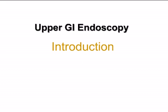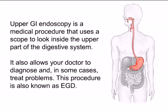Upper GI Endoscopy. Introduction. Upper GI Endoscopy is a medical procedure that uses a scope to look inside the upper part of the digestive system. It also allows your doctor to diagnose and, in some cases, treat problems. This procedure is also known as EGD.